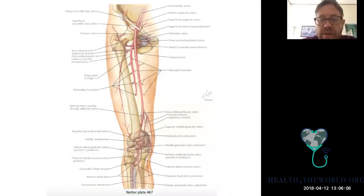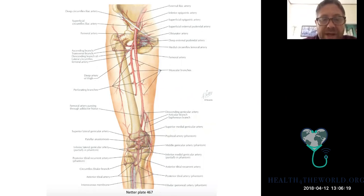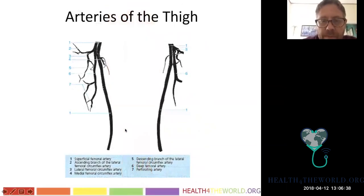The SFA has a few muscular branches; the profunda has many more. The lateral circumflex femoral artery gives off a descending branch — people often confuse this with the profunda, but they're different. The profunda is much larger than the descending branch, and the descending branch of the lateral circumflex femoral is more lateral. Here's the SFA, the profunda giving off its descending branch of the lateral circumflex femoral, and the main branch of the profunda.